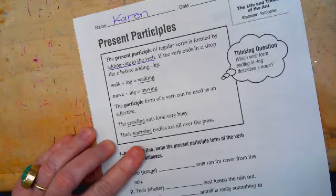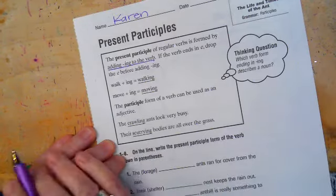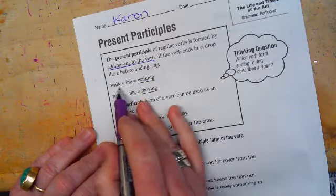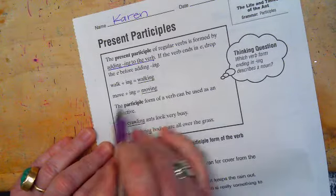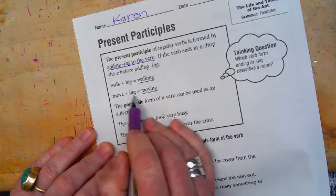So for example, and they've given us some examples, walk plus ING is walking. Move plus ING is moving.